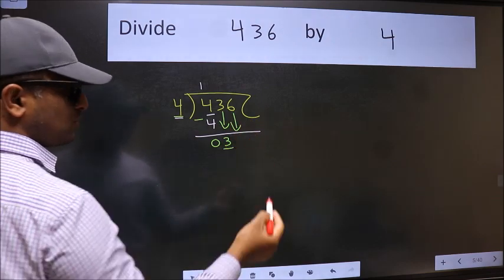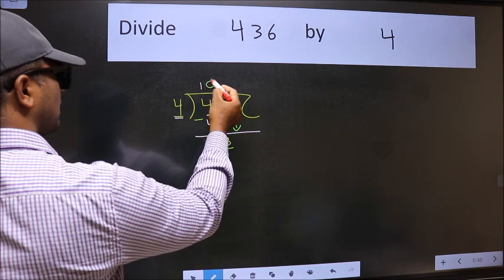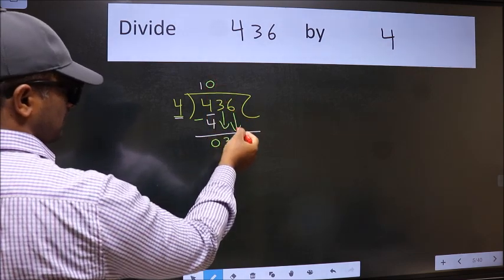And the rule to bring down second number is we should put 0 here. Then only we can bring this number down.